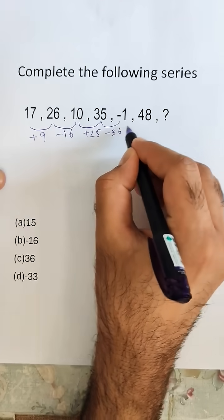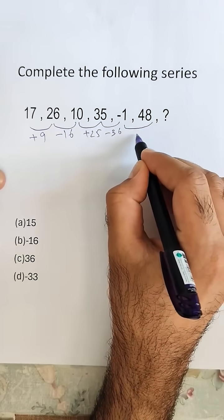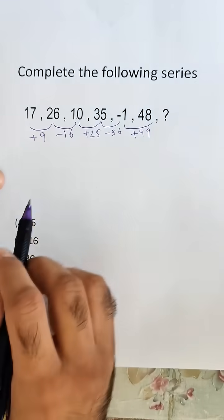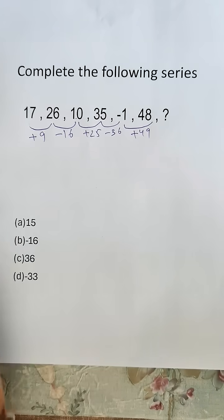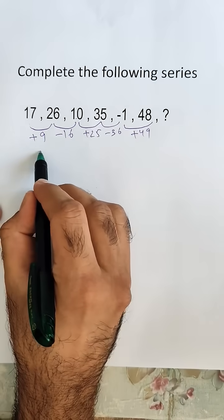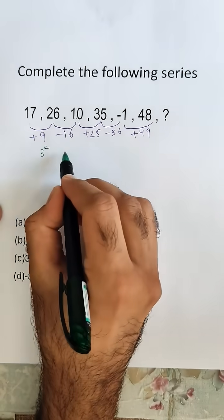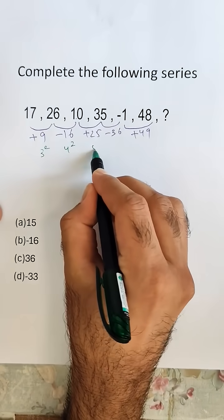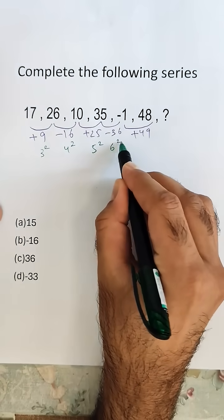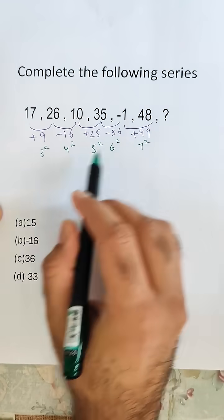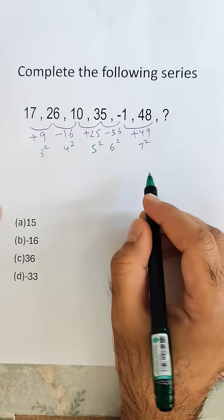And here it is plus 49. So if we ignore the sign, this 9 can be written as 3 square. Similarly 4 square, 5 square, 6 square, 7 square. So we follow the pattern, so next will be 8 square.